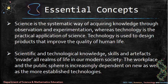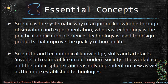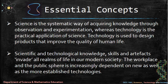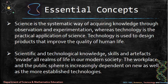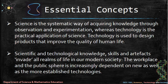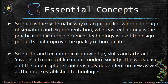Essential concepts. One: science is the systematic way of acquiring knowledge through observation and experimentation, whereas technology is the practical application of science. Technology is used to design products that improve the quality of human life. Two: scientific and technological knowledge, skills, and artifacts invade all realms of life in modern society. The workplace and the public sphere are increasingly dependent on new as well as more established technologies.